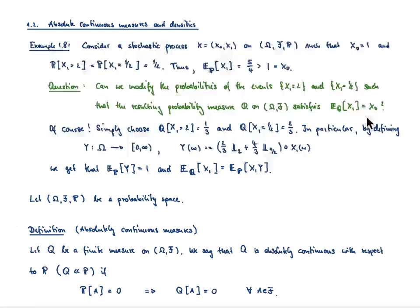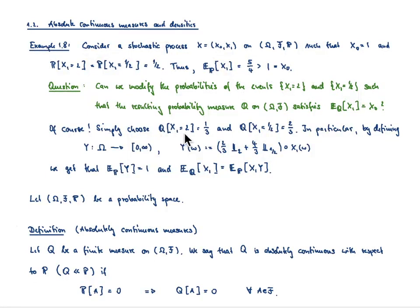The answer is of course we can do that. We have simply two unknowns — Q(X_1 = 2) and Q(X_1 = 1/2) — and two equations. Equation one: the expectation of X_1 under Q equals 1. Equation two: it's a probability measure, so both probabilities sum to 1. Solving this system gives Q(X_1 = 2) = 1/3 and Q(X_1 = 1/2) = 2/3.